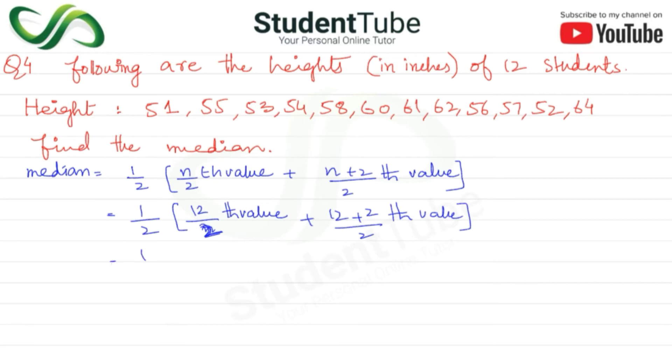So 1/2, this becomes 2 ones are 2, 2 sixes are 12, so 6th value. Plus this becomes 12 plus 2 is 14, so 14 upon 2 divided, 2 ones are 2 and 2 sevens are 14, 7th value. So 1/2 times the 6th value and 7th value.